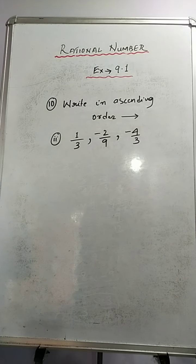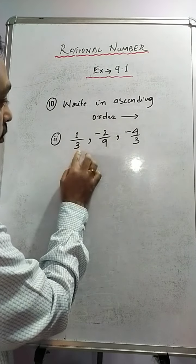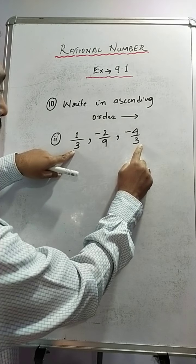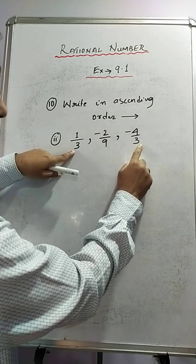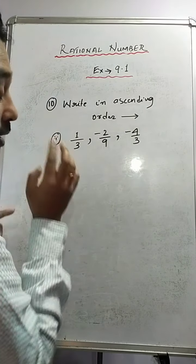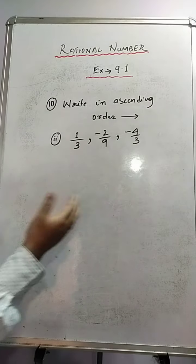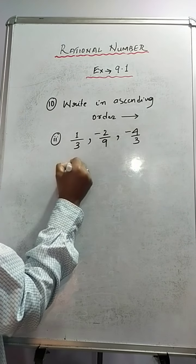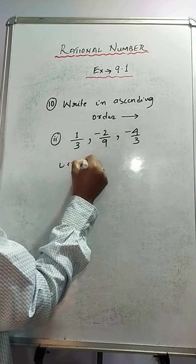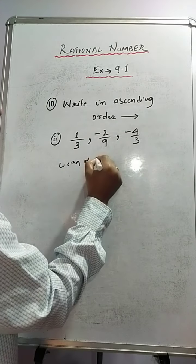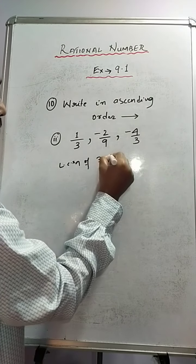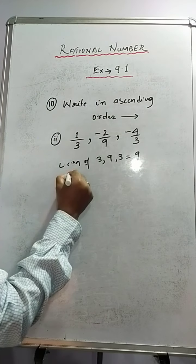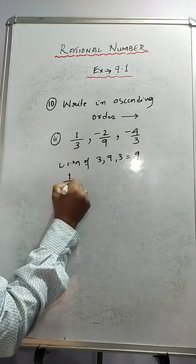In sum number 2 we have 3 rational numbers where the denominators are not all the same — two share the same denominator but the third does not. So we need to find the LCM of 3, 9, and 3, which is 9. Now take the first rational number, 1 by 3. Divide 9 by 3 to get 3, then multiply 3 with both numerator and denominator to get 3 by 9.